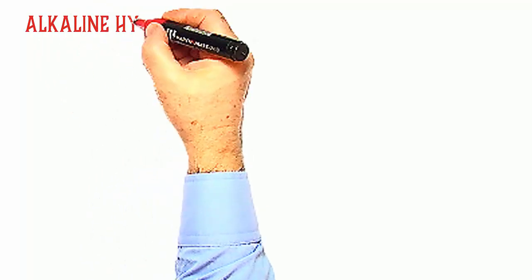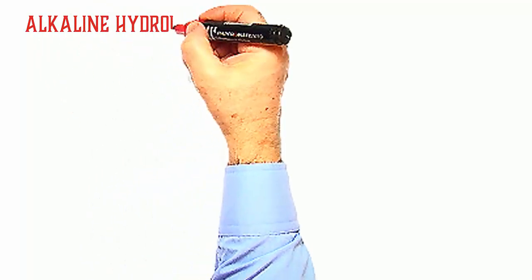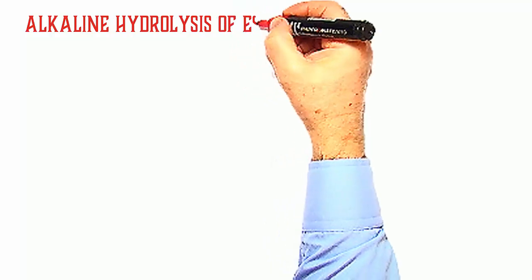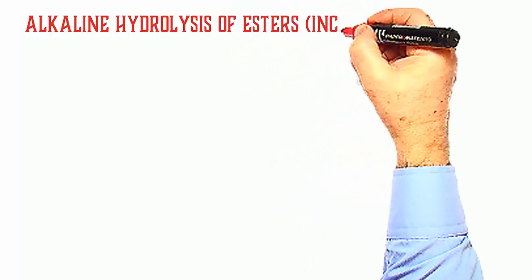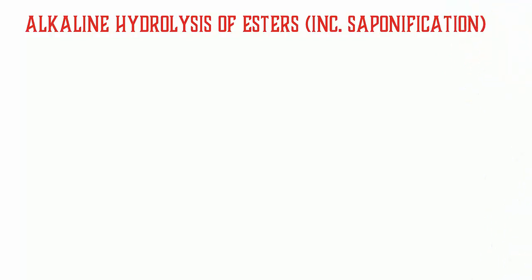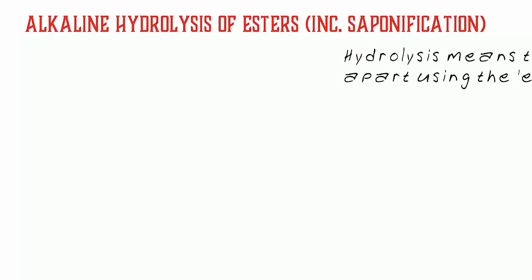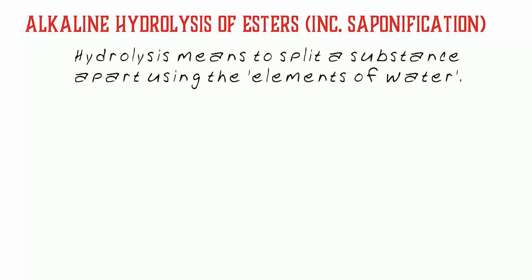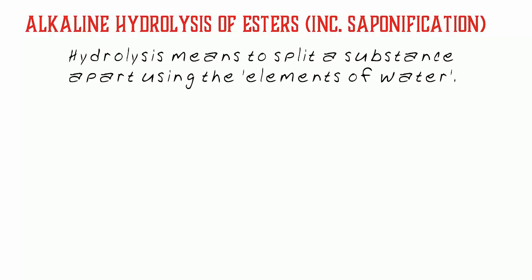In this video I take a look at the alkaline hydrolysis of esters. It would in fact be better to refer to it as the alkaline catalyzed hydrolysis of esters. Where the ester is a complex ester, namely a fat or an oil, then the hydrolysis is known as saponification because it produces a soap. Hydrolysis can be defined as splitting a substance apart using the elements of water.